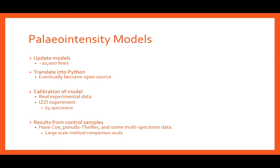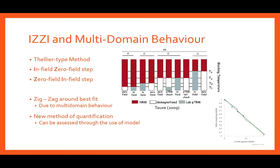I've also been carrying out an IZZI experiment, the results from which are hopefully going to be used to calibrate the model with real data. To do this we've used control samples with a synthetic paleointensity signal that have previously had Thellier and some multi-specimen experiments run on them. With all these different types of experiments used, there's also the opportunity for a large-scale method comparison study. IZZI experiments fall under the Thellier family of experiments. Each temperature step consists of an in-field and then out-field heating, and the order in which these occur alternates between each step, giving rise to the name.